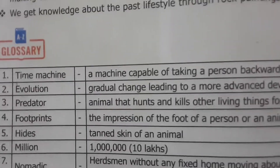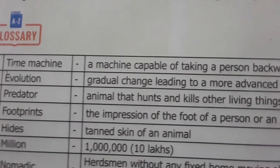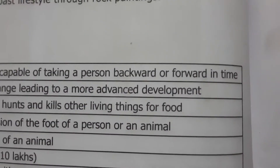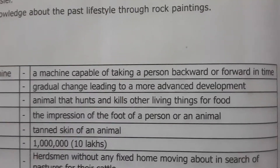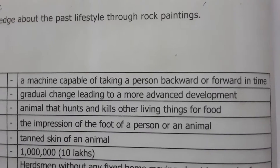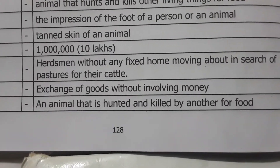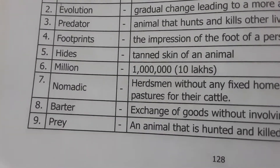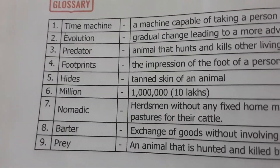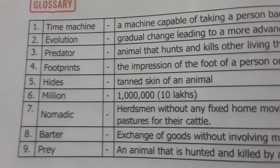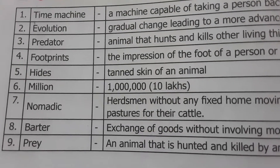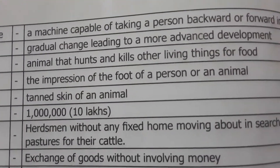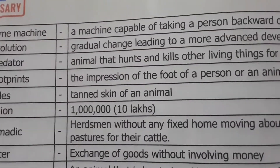These are some of the main points in the lesson. Some glossary terms which are very essential for this lesson: Time machine — a machine capable of taking a person backward or forward in time. Evolution — gradual change leading to a more advanced development. Barter — exchange of goods without involving money. Footprints — the impression of the foot of a person or animal.